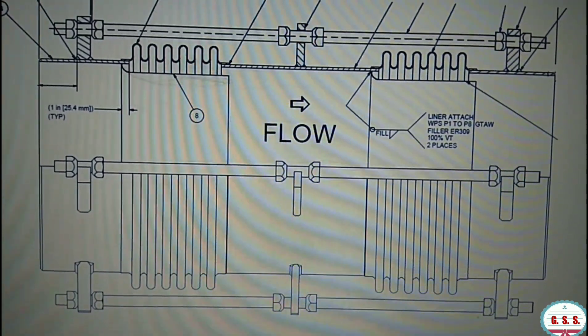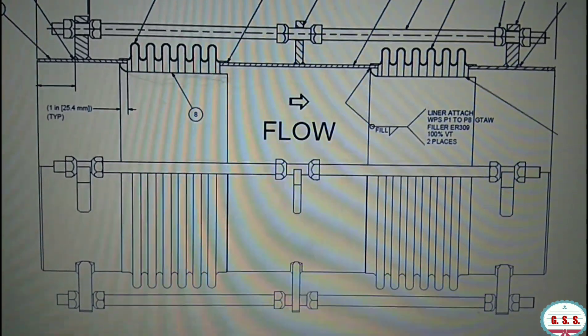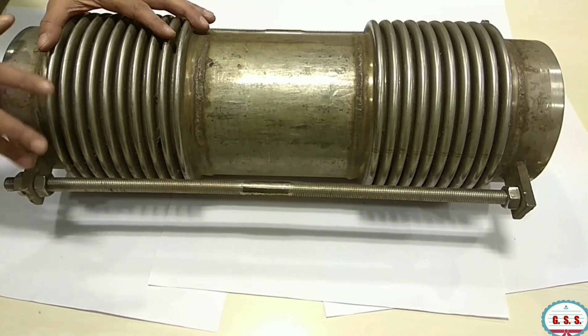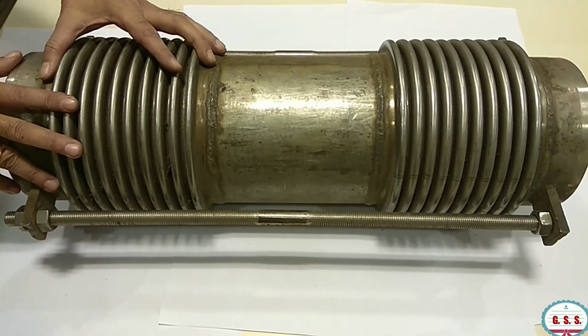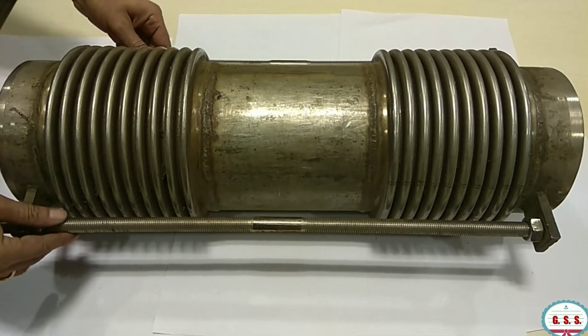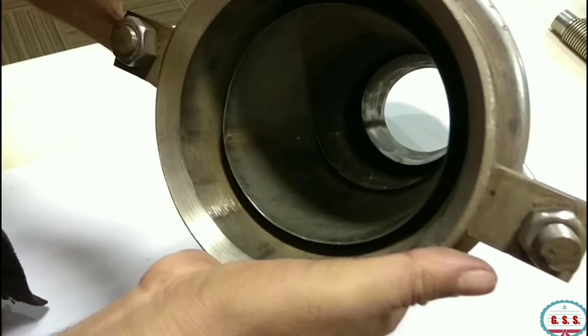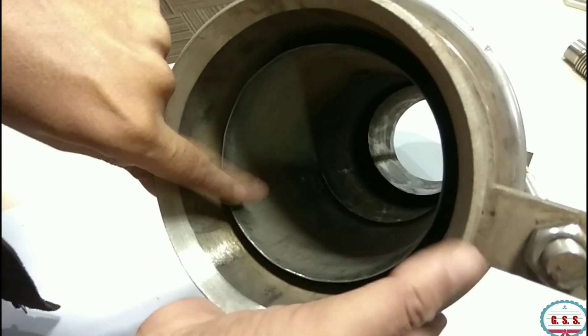Now you can see one universal bellows, a tight universal bellows. This is the internal sleeve.